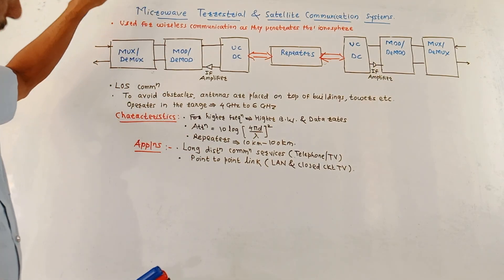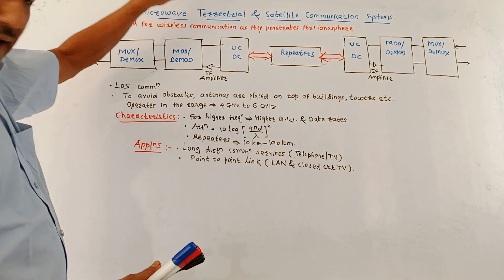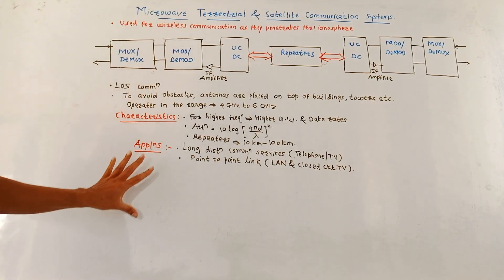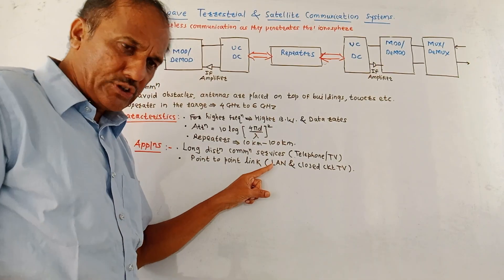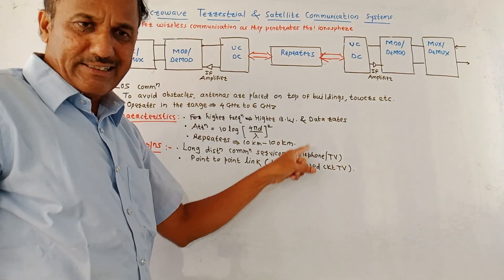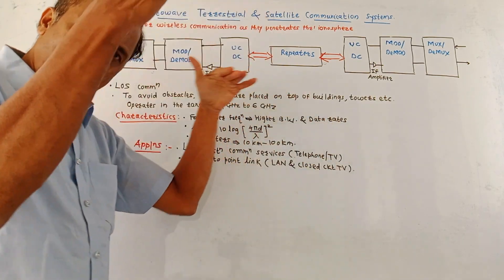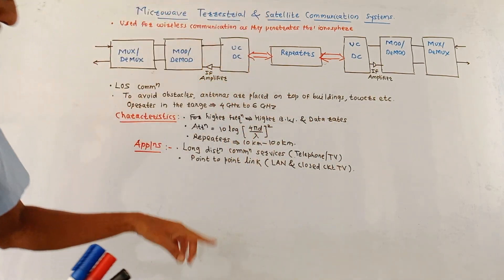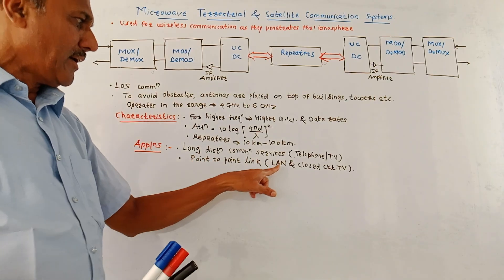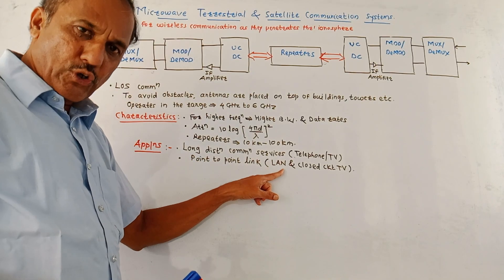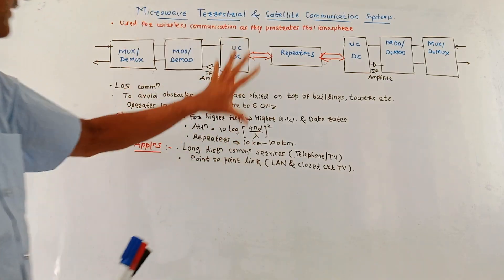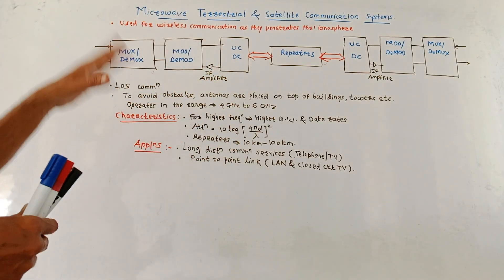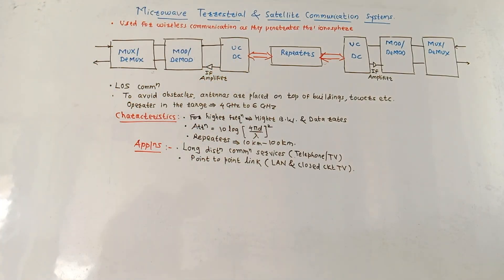As far as the applications of this microwave terrestrial communication system are concerned: for long distance communication services it includes telephone signals and television signals. For short distance communication — that is point to point link — it may include LAN and closed circuit television.